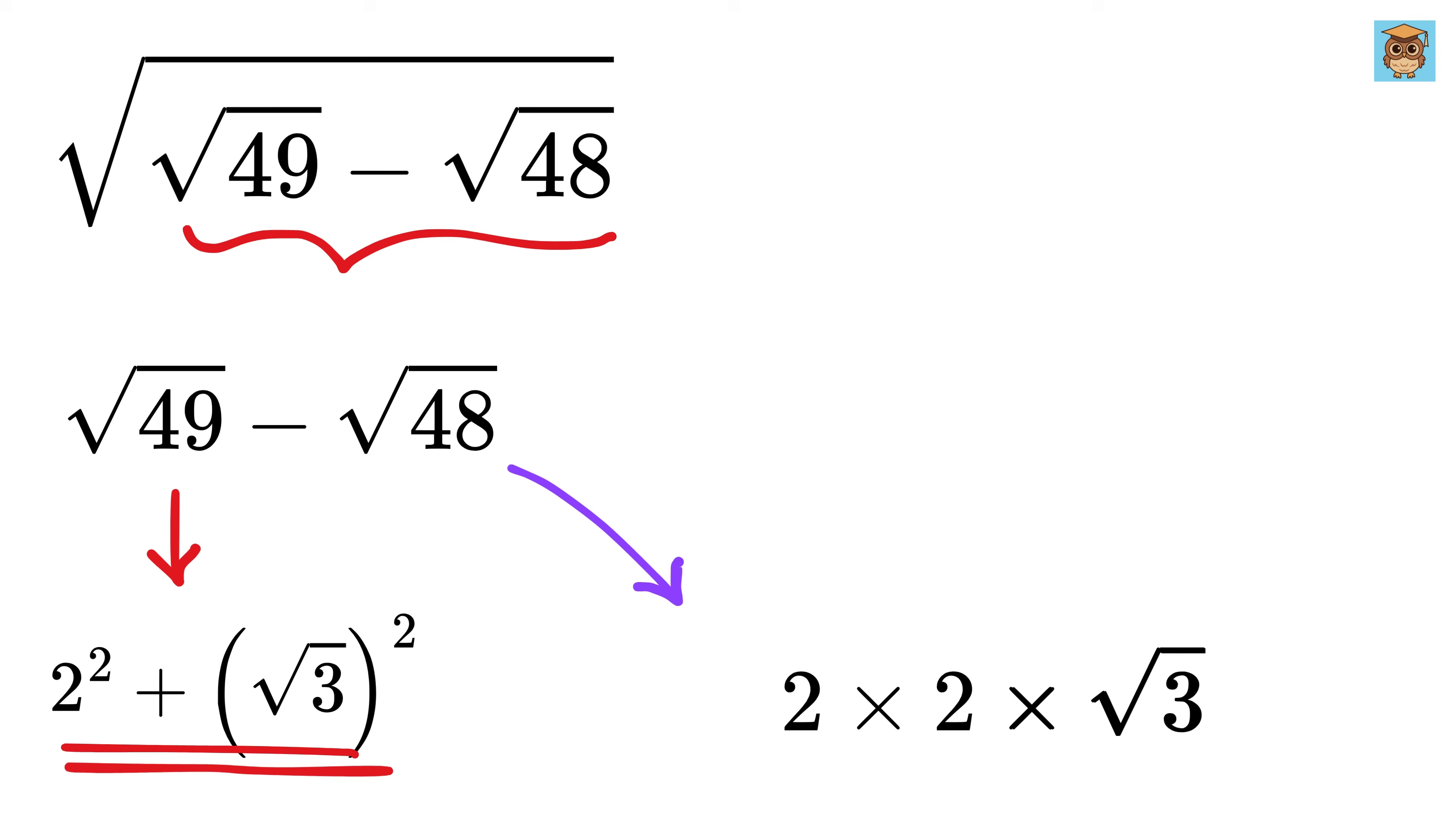Therefore, using this and this, the square root of 49 minus the square root of 48 can be written as 2 squared plus square root of 3 squared minus 2 times 2 times square root of 3.